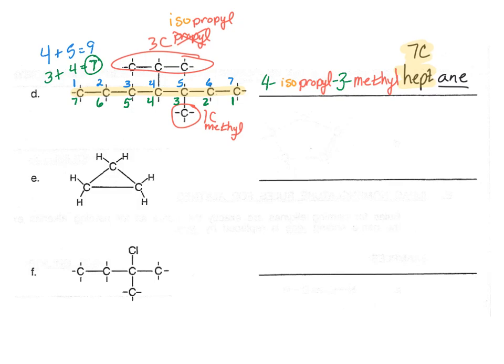Let's look at compound E. One thing to note immediately is that it is cyclic, so we'll need to put cyclo in its name. The first step is to identify the class of compound — it's a hydrocarbon with all single bonds, so it's an alkane, ending in -ane. We count three carbons in the main ring, so that gives us prop-, making it propane. Since it is cyclic, we write in cyclo, giving the complete name cyclopropane.